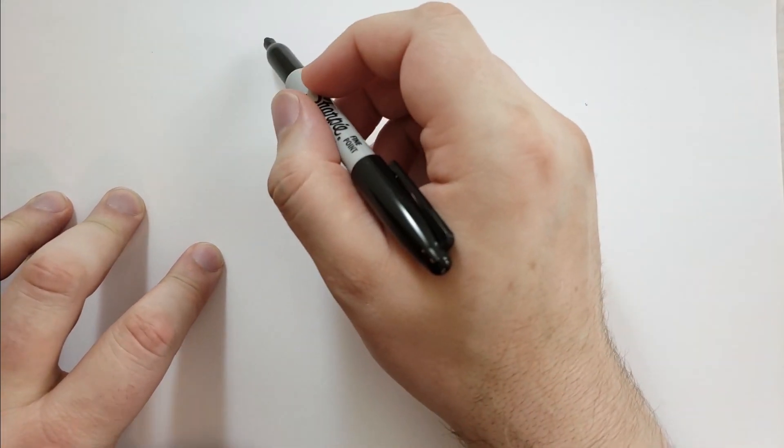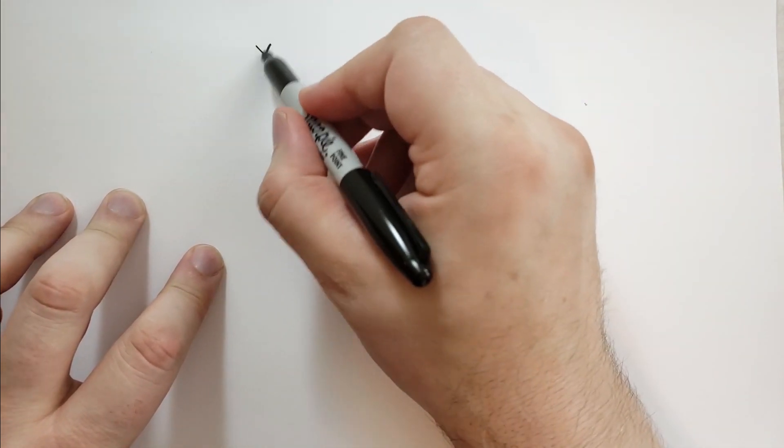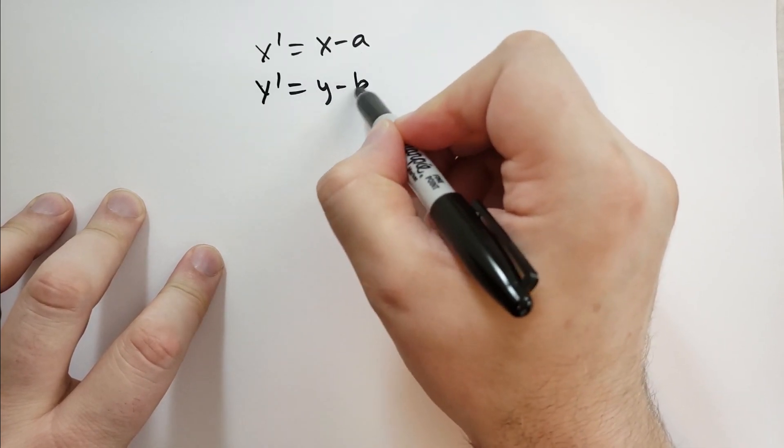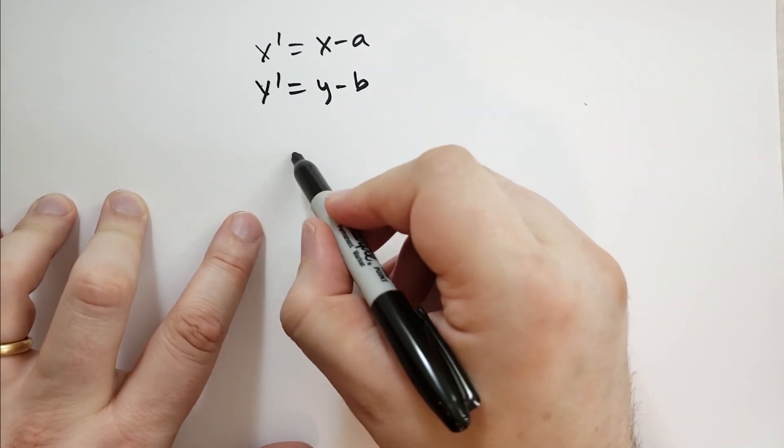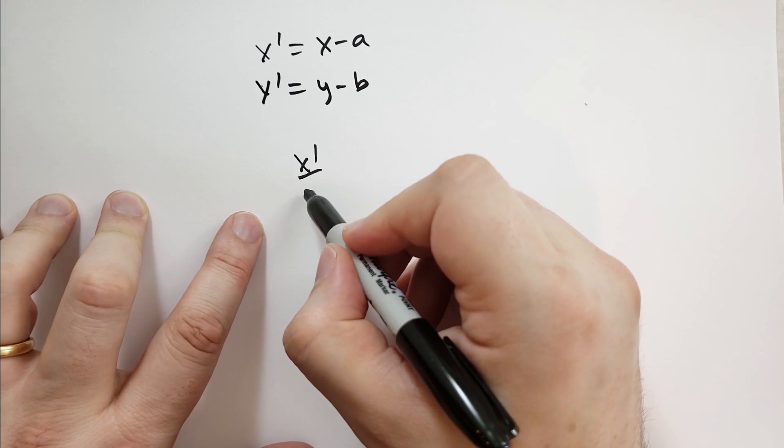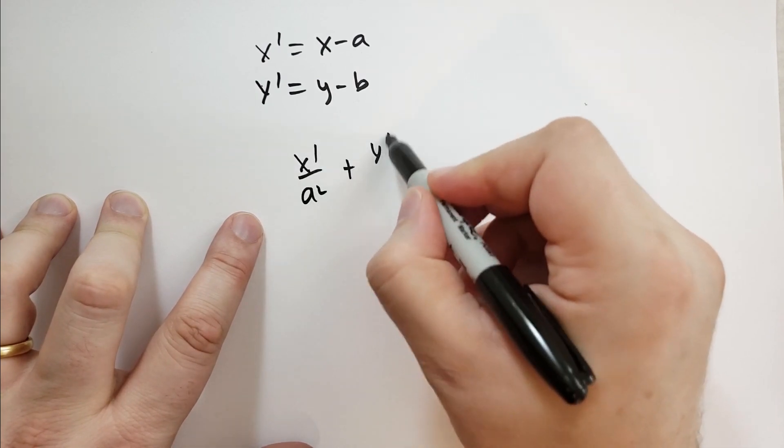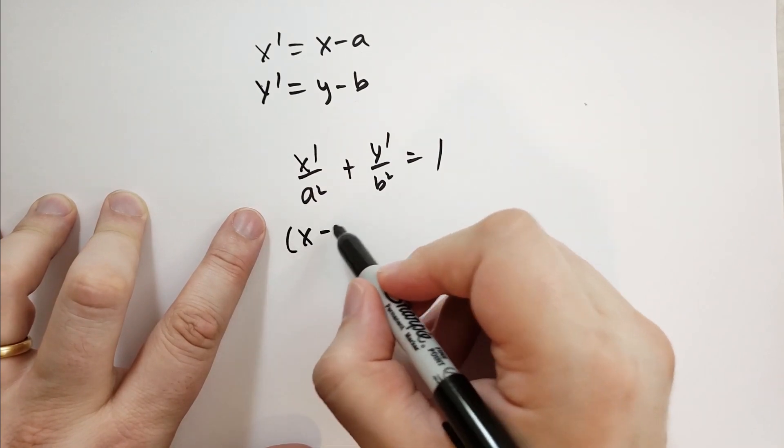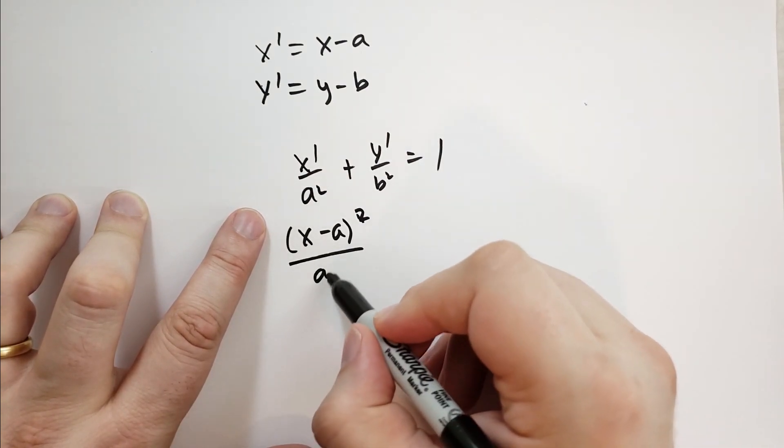So we take x prime is equal to x minus a, y prime is equal to y minus b, and we get the new equation. x prime over a squared plus y prime over b squared is supposed to equal 1. And so we get x minus a squared over a squared.